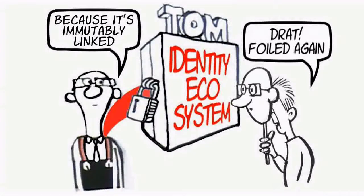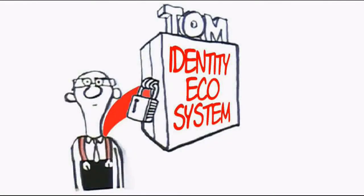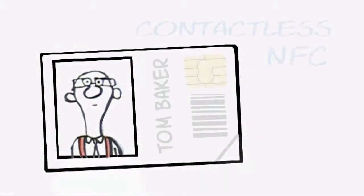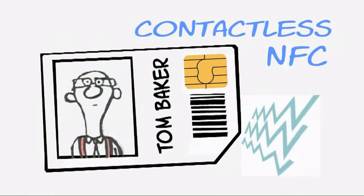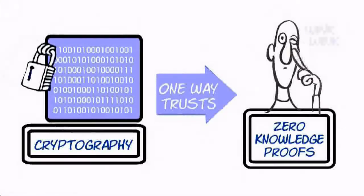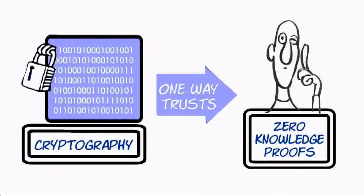This binding needs to happen in a form factor that both guarantees the binding is usable and provides the interfaces necessary to connect with the digital world. The technologies around cryptography, one-way trusts and zero-knowledge proofs all exist and some of these are already implemented.